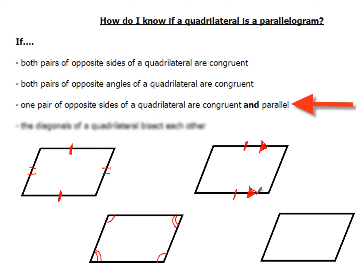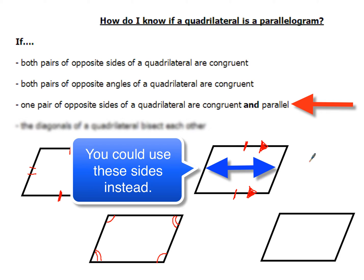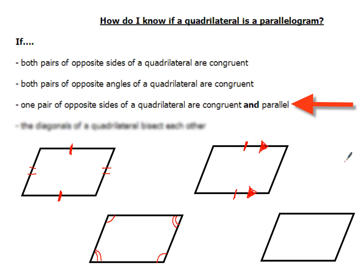So we could do it with either that pair of sides — the ones on the top and the bottom of our figure — or sometimes they'll be the ones on the left or the right-hand side. So that's a third way to prove that a quadrilateral is a parallelogram.